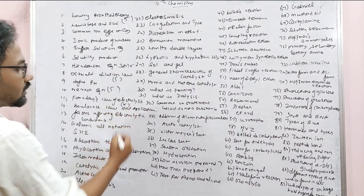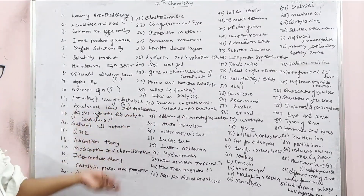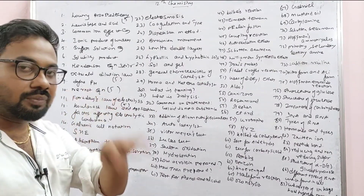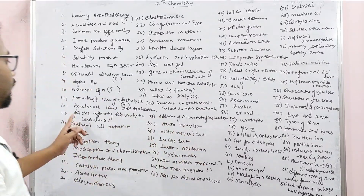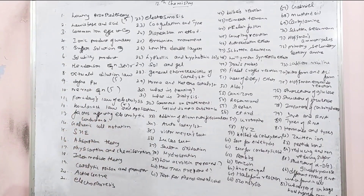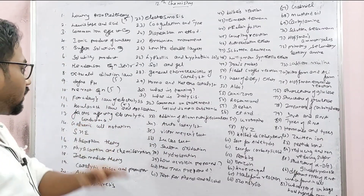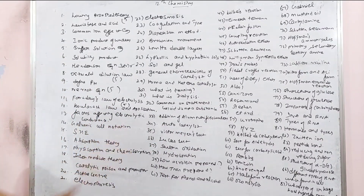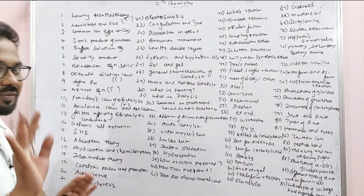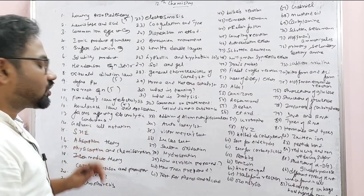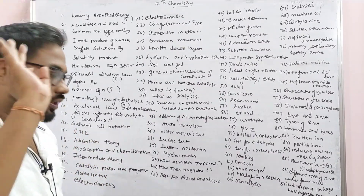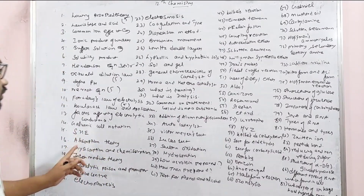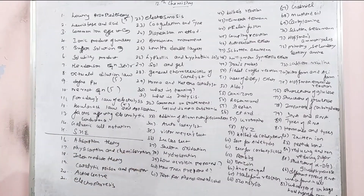Kohlrausch law and application 5-Mark — first application. Factors affecting electrolytic conductance 3-Mark. Galvanic cell notation 3-Mark, SHE single hydrogen electrode 3-Mark, Absorption theory Physical chemistry.